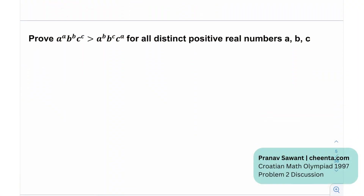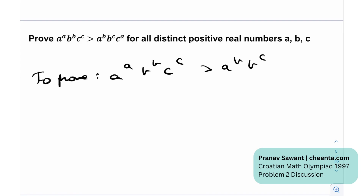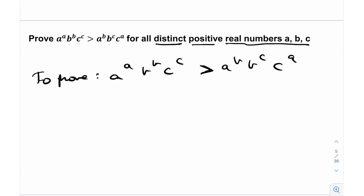We need to prove this for distinct positive real numbers A, B, C. First, we need to prove A raised to the power of A, times B raised to the power of B, times C raised to the power of C is greater than A raised to the power of B, times B raised to the power of C, times C raised to the power of A. There's a nice cyclic structure on the right-hand side. That might seem obvious, but it's going to be critical to this problem.